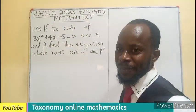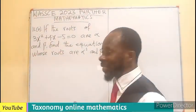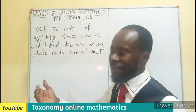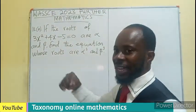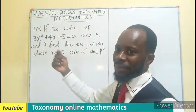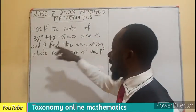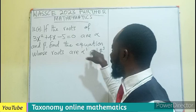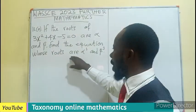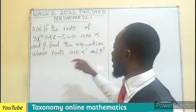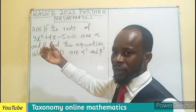Welcome, WASSCE 2023 Further Mathematics, Question 11A of session B. If the roots of 3x² + 4x - 5 = 0 are α and β, we have to find the equation whose roots will now be α³ and β³.